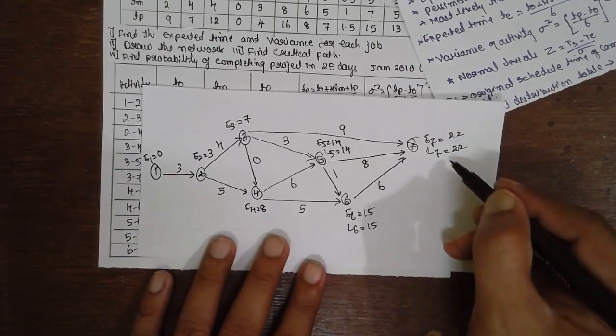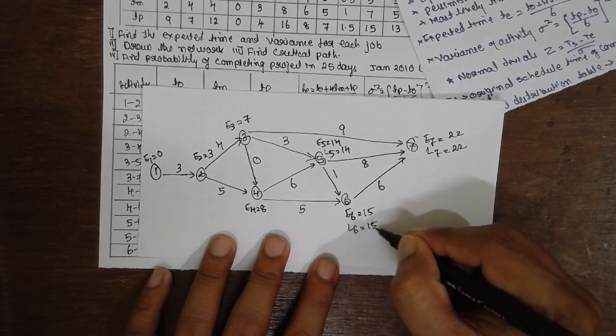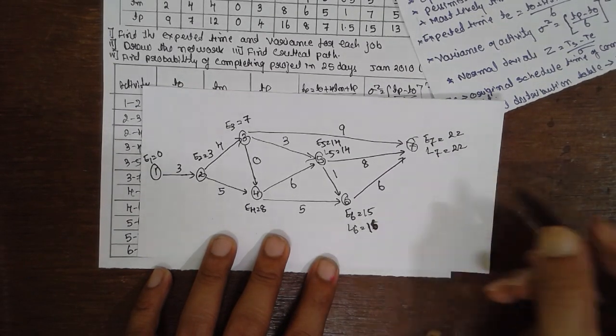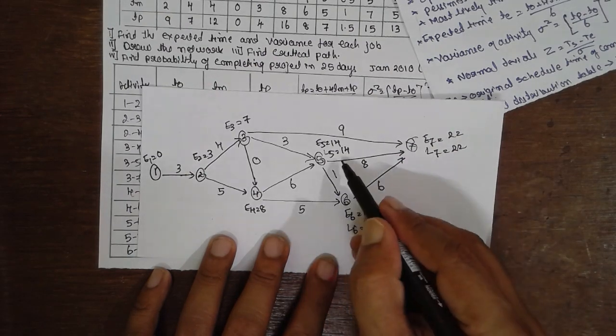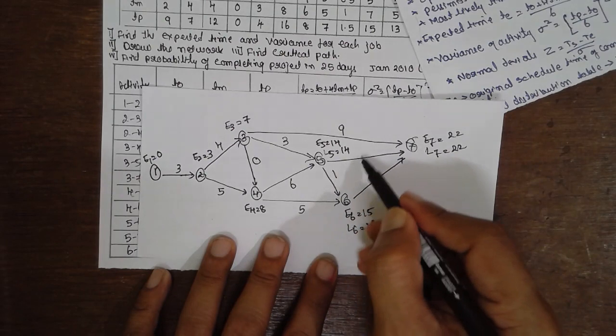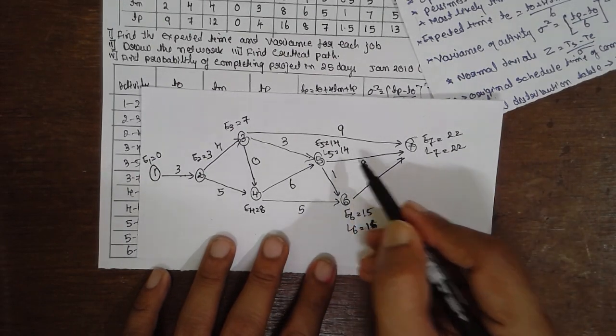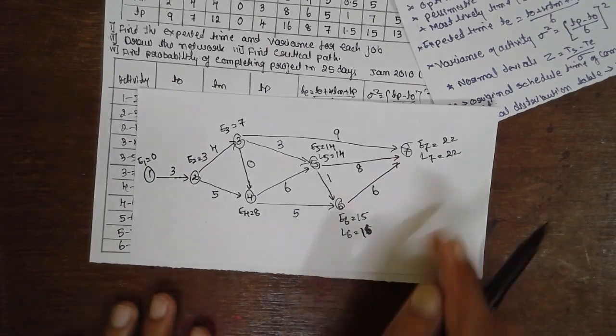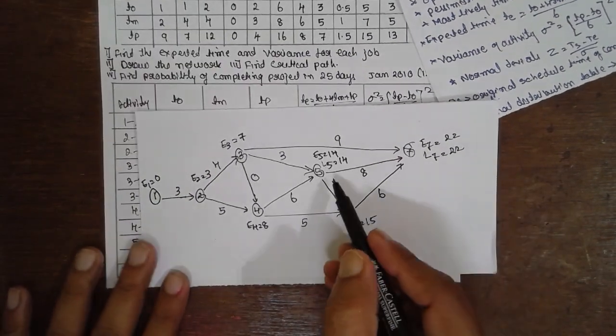I have written wrong here. 22 minus 6 is 16 here. This is 16, not 15 here. 22 minus 8 is 14. 16 minus 1 is 15. You have to select the smallest value. The smallest value is 14 here. Now it is 14 here.